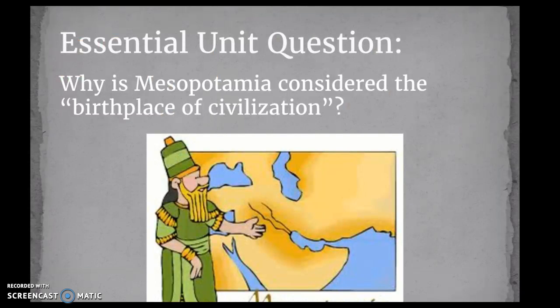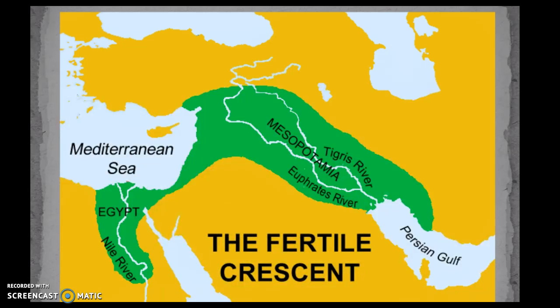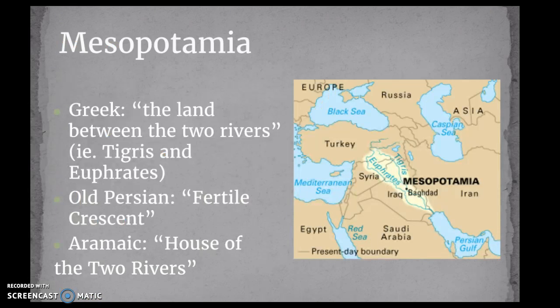As we move from those early cities into Mesopotamia, where you've got many very advanced urban cities, our essential unit question is going to be: why is Mesopotamia considered the birthplace of civilization? It is very important in terms of the way that other civilizations after it develop and the things that Mesopotamia creates that others then build on. Mesopotamia sits between two rivers — the Tigris and the Euphrates — and the name Mesopotamia in Greek means 'the land between the two rivers,' and in Old Persian and Aramaic, 'house of the two rivers.' So obviously rivers and fertility are very important.